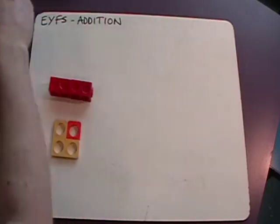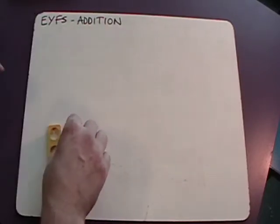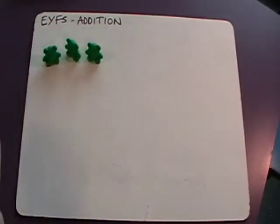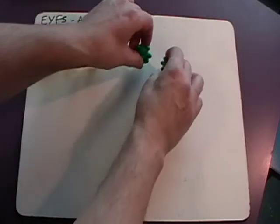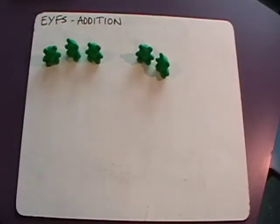Once we've taught that, we'll start to move on to some simple addition problems. For example, if Kate has three bears and Joe has two bears, how many bears do they have all together?